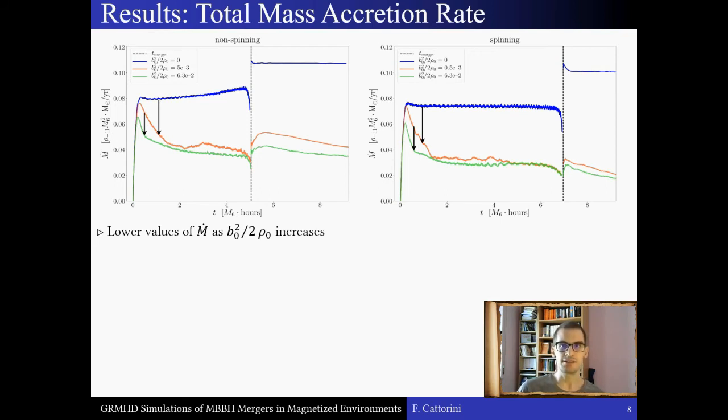Instead, m dot is highly dependent on the plasma magnetization and diminishes as the magnetization increases. Interestingly, the post-coalescence values of m dot for the magnetized runs settle to values which are comparable to the ones before coalescence, whereas the non-magnetized runs show a definite increase in m dot, and we think this is due to the way the plasma settles after the coalescence.